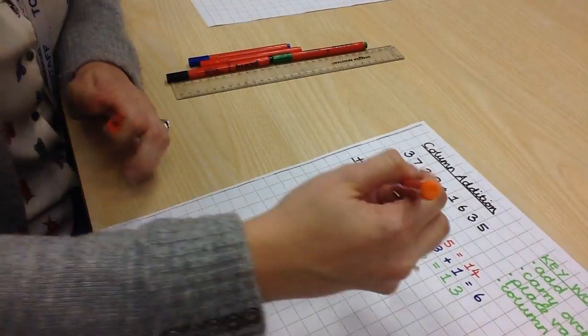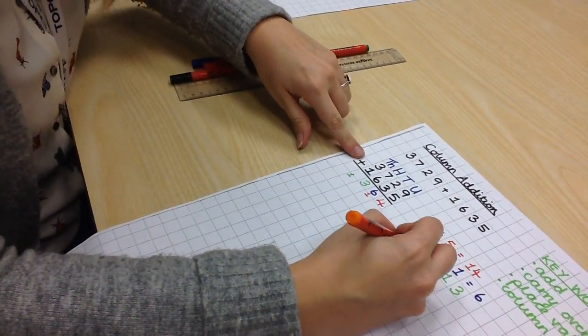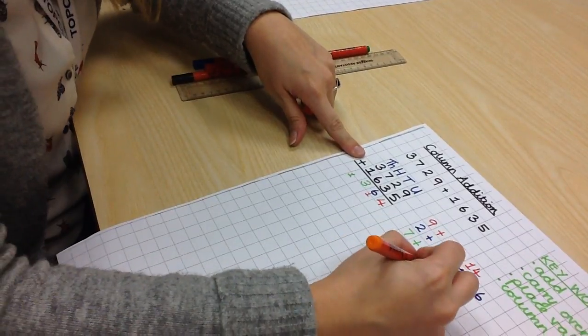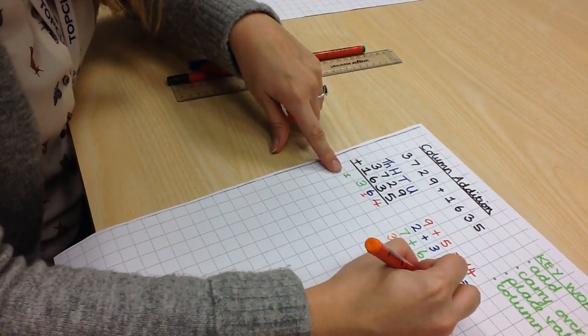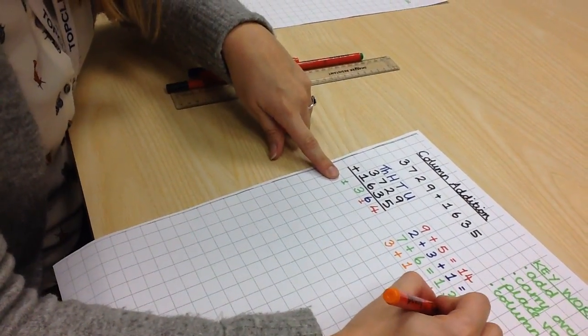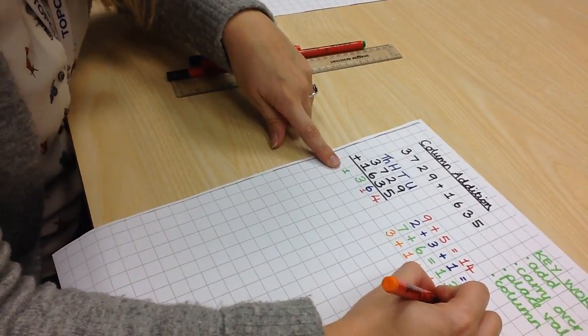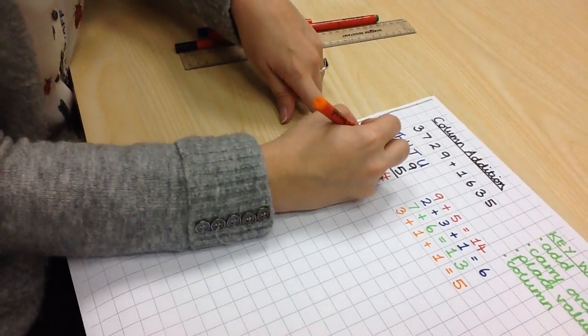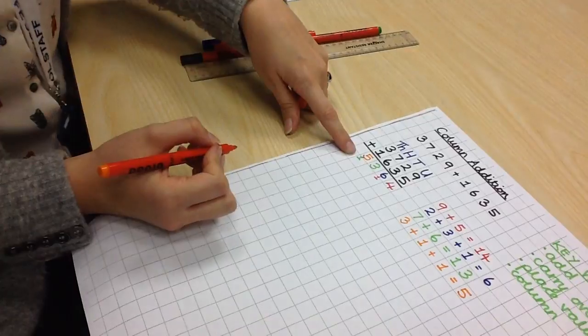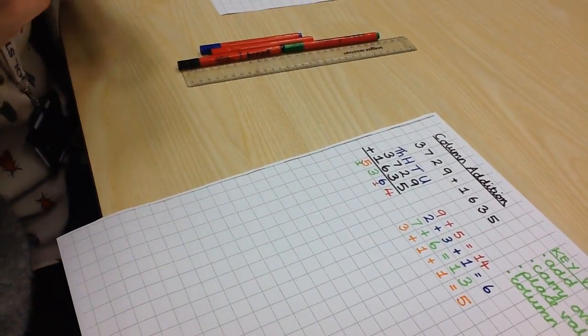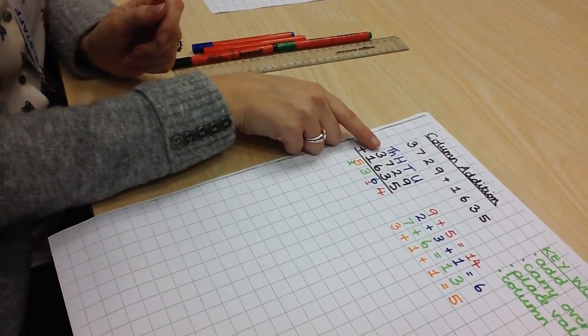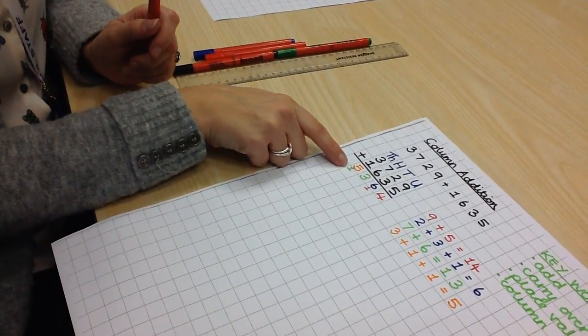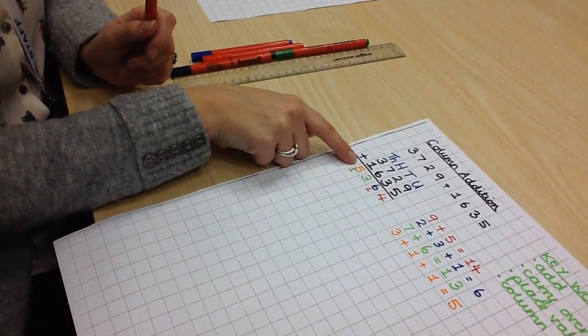So, now we add 3 plus 1 plus the carried over 1, and that equals 5. And we place that finally into the thousands column. Understanding that that is 3,000 plus 1,000 plus the final carried over 1,000 to equal 5,000.